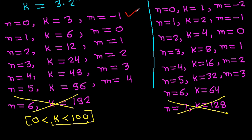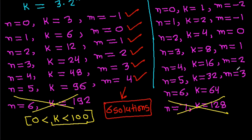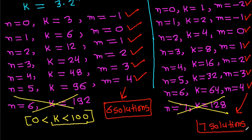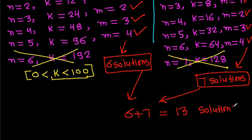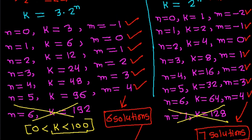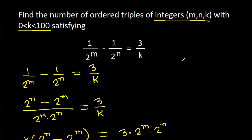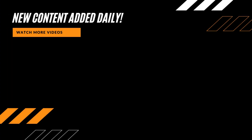So in total we have 6 plus 7, that is 13 solutions. Therefore, the number of ordered triples (m, n, k) is 13.